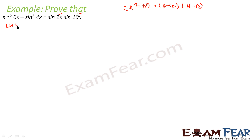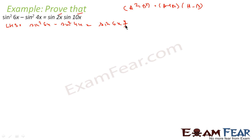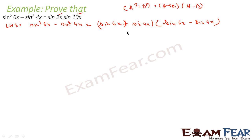So LHS is equal to sin squared 6x minus sin squared 4x. We can write this as sin of 6x plus sin of 4x into sin of 6x minus sin of 4x.